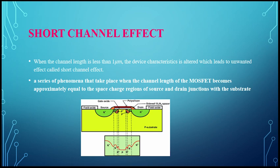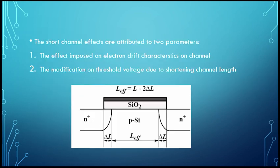As you can see in the picture, at that time the short channel effect occurs. What are the two attributes or parameters that cause short channel effect? There are two things that are imposed when short channel effect occurs: the first is electron drift, and the second is threshold voltage reduction due to short channel depth.